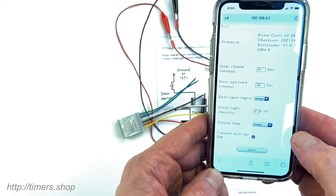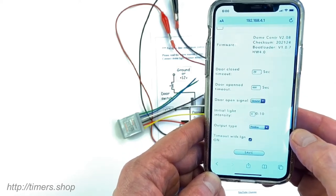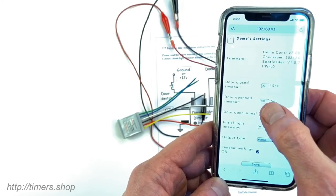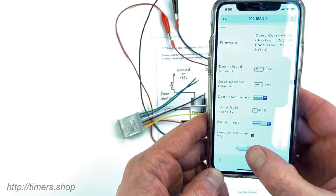Timeout with ignition on means even with ignition on, it will timeout in 600 seconds. If you don't want it to timeout, then uncheck this box. Then you can save it.